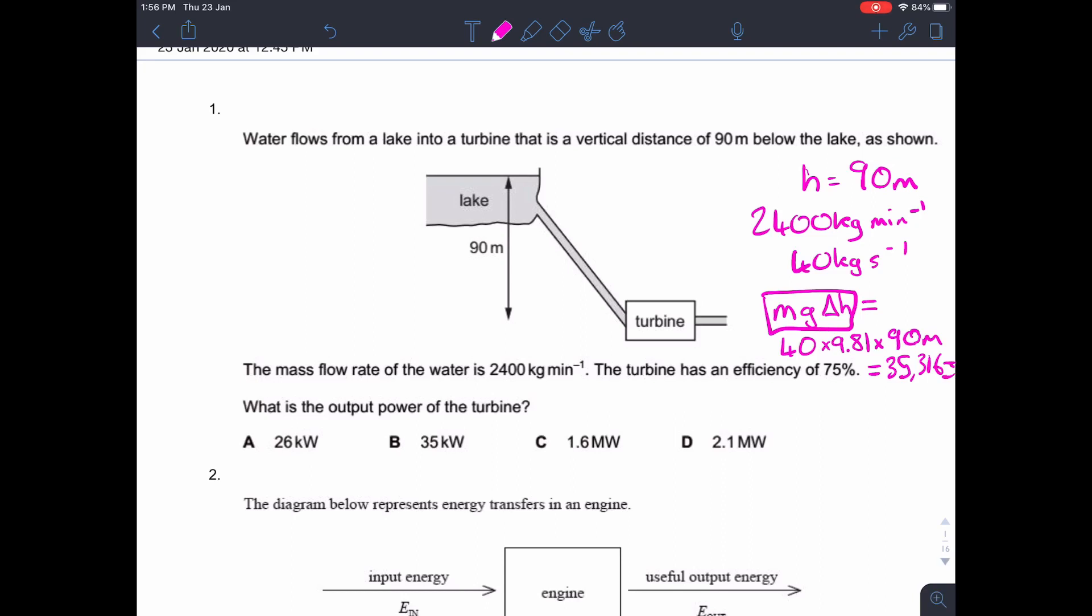So 40 times 9.81 times 90 gives 35,316 joules. But, so you would think that B was the answer, but the turbine only has an efficiency of 75%, so the output power has got to be 75% of that, which gives us about 26 kilowatts, which is A.